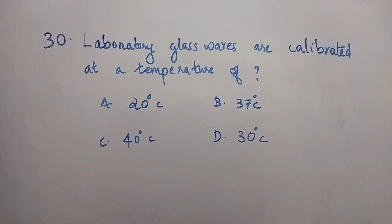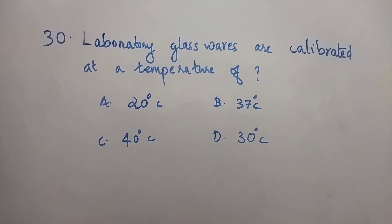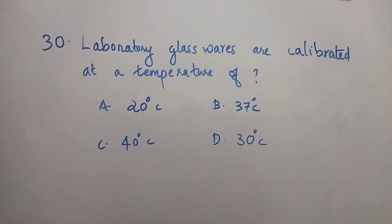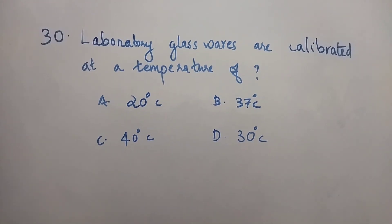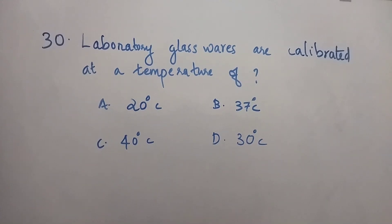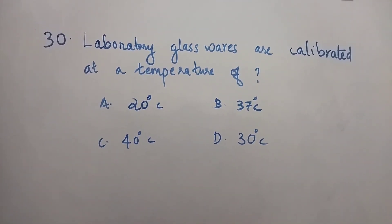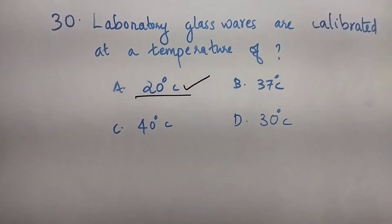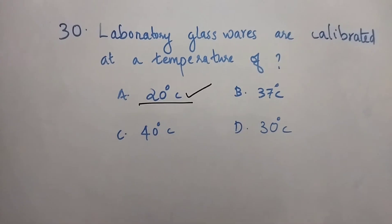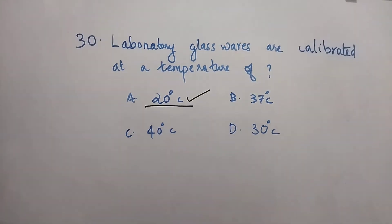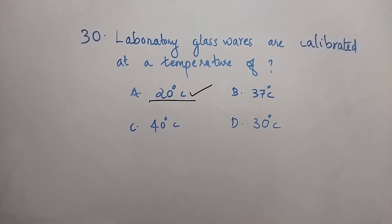Question number 30: Laboratory glassware are calibrated at a temperature of — Option A: 20°C. Option B: 37°C. Option C: 40°C. Option D: 30°C. The right answer is Option A, 20°C. Laboratory glassware are calibrated at 20 degrees Celsius.